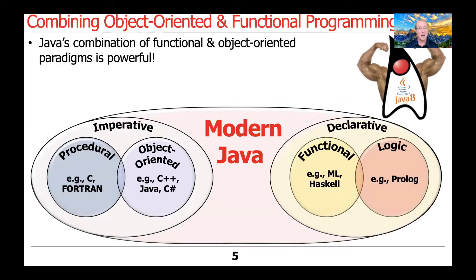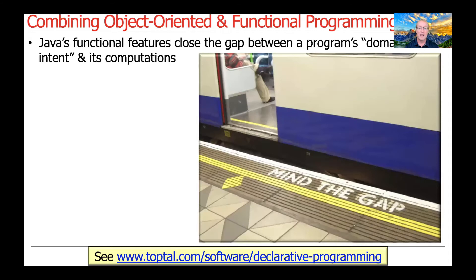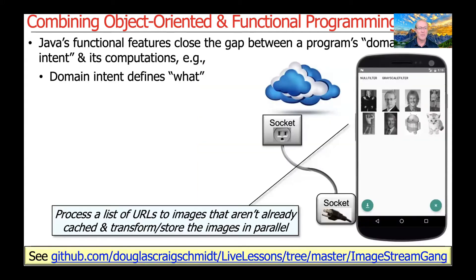Java's combination of object-oriented and functional programming features is very powerful. In particular, its functional programming features can help to close the gap between a program's domain intent — in other words, the requirements it's trying to solve — and the computations that are provided to realize that domain intent.